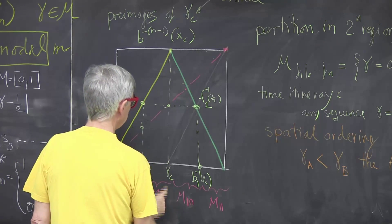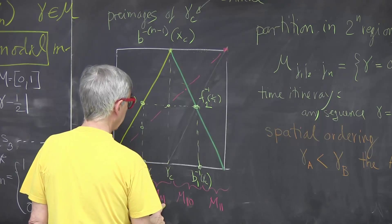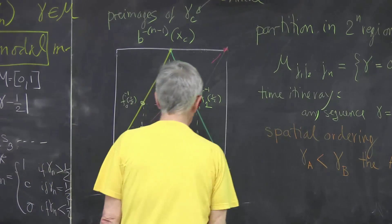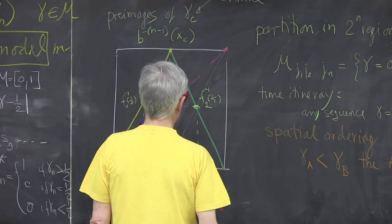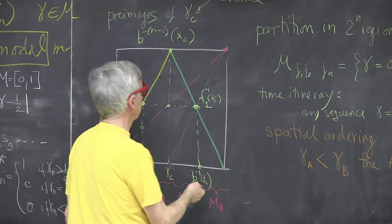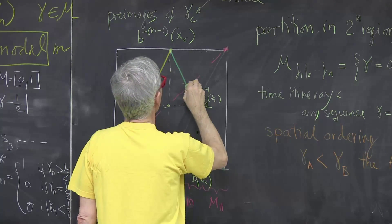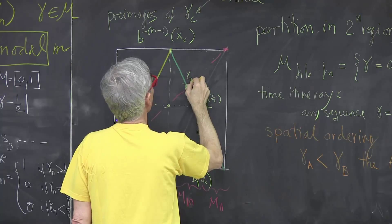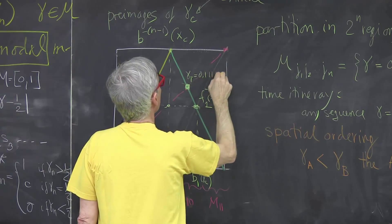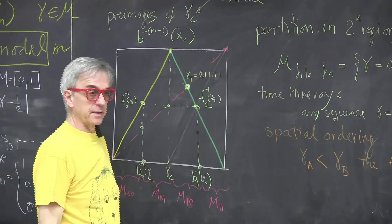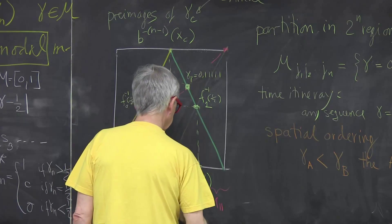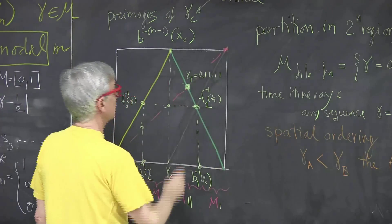If I started on the left-hand side — that's the zero region — in one iterate I'll end up on the right-hand side. Doing the binary analysis, I realize this fixed point gamma_1 should have the form 0, 1, 1, 1, 1, 1, 1 in my symbolic dynamics. So in symbolic dynamics, this should be 1, 1 and this should be 1, 0 forever.